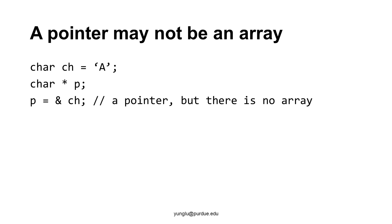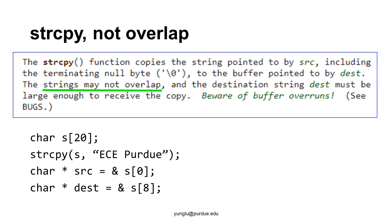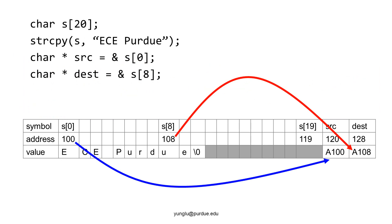Let me explain why the source and the destination must not overlap. Consider this example. We create an array of 20 characters. A string of ECE space PURDUE is stored in this array. This array is large enough to store this string. There is no problem. Next, two pointers are created, pointing to the addresses of two elements of this array. This slide shows the memory of the array and the pointers. Please notice that src and dest point to two different elements of the same array.